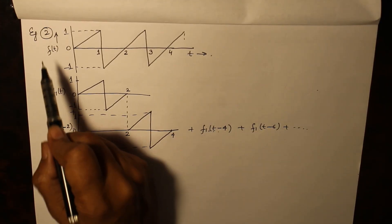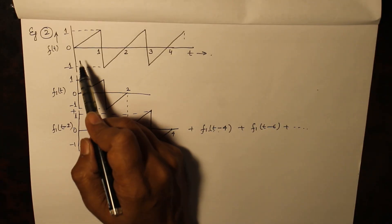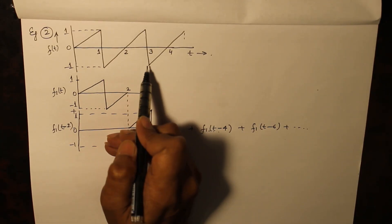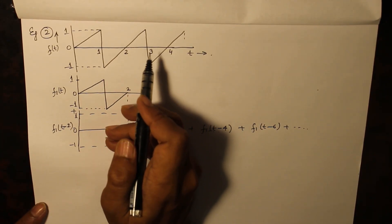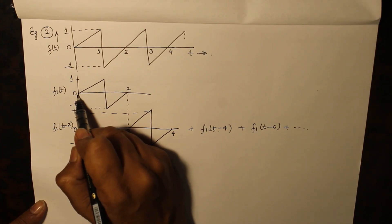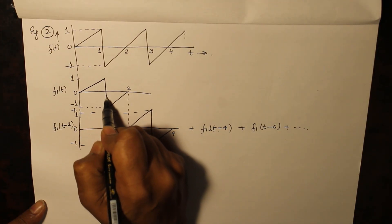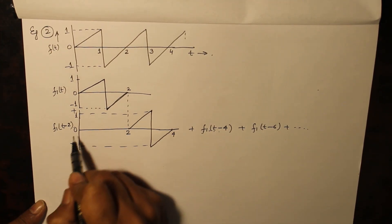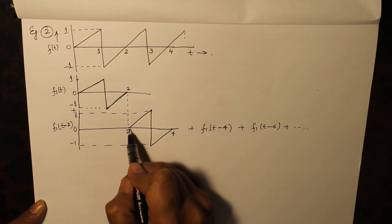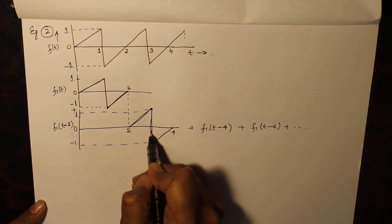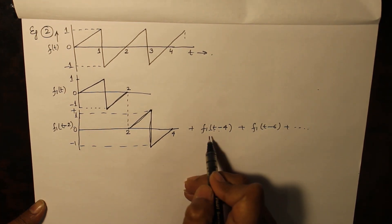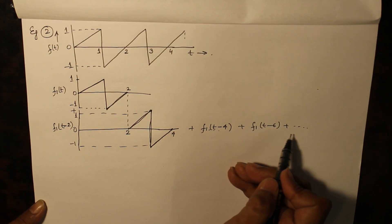Now we take up another example in which there is a sawtooth waveform. This waveform is consisting of f1(t) plus shifted function f1(t-2) plus f1(t-4), f1(t-6), and so on.